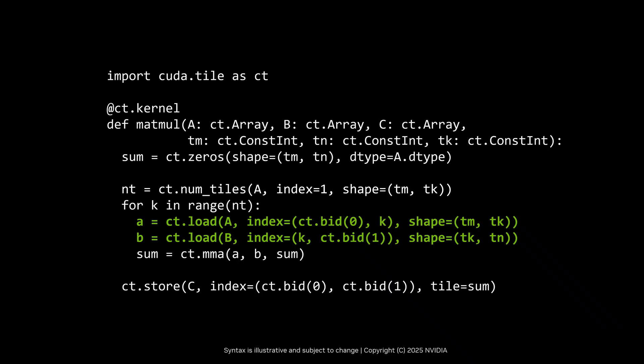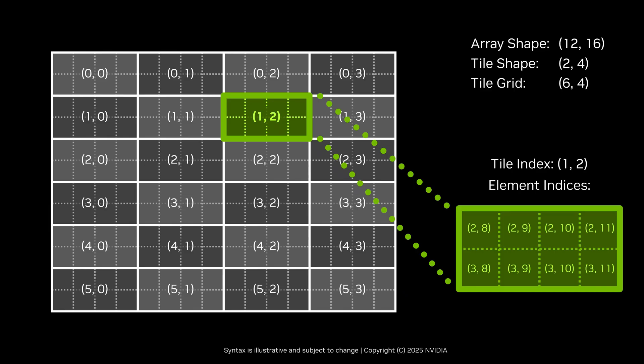Tile load operations create a tile by copying a part of a global array. Load and store operations are indexed in the tile space. The tile space of a global array is the multidimensional space of tiles into that global array of a certain tile shape. A tile index (i,j) with shape s refers to the elements of the global array that belong to the (i,j)th tile of that shape.